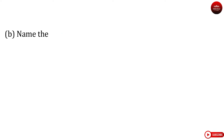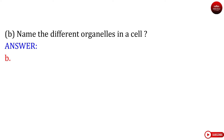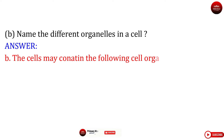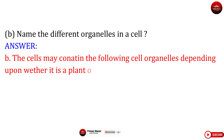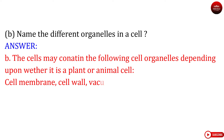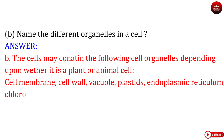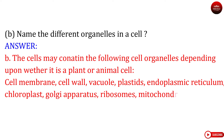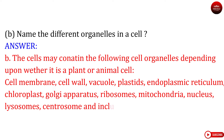Question B: Name the different organelles in a cell? Answer B. The cells may contain the following cell organelles depending upon whether it is a plant or animal cell: cell membrane, cell wall, vacuole, plastids, endoplasmic reticulum, chloroplast, Golgi apparatus, ribosomes, mitochondria, nucleus, lysosomes, centrosome, and inclusion bodies.